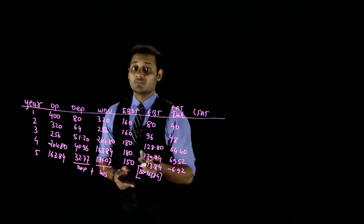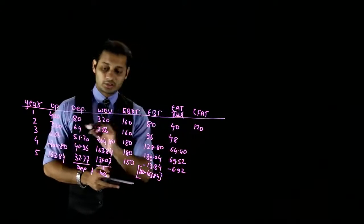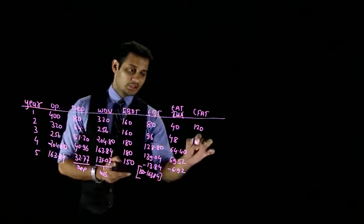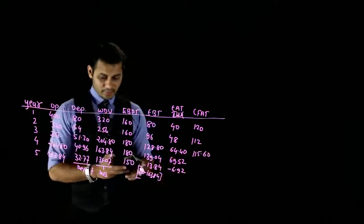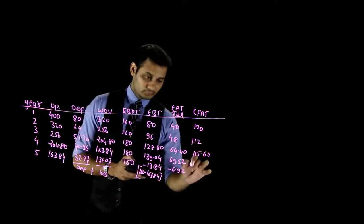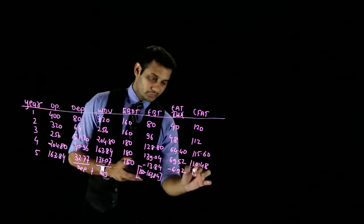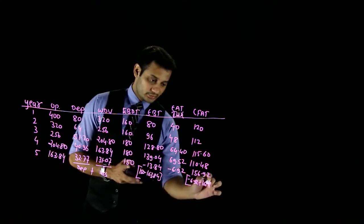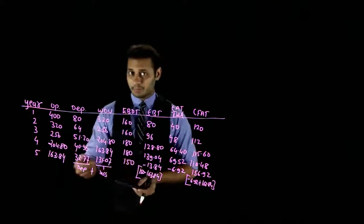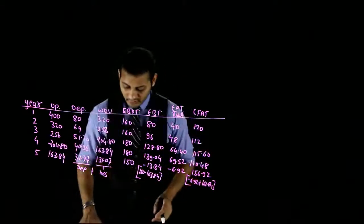Now calculating Cash Flow After Tax by adding back depreciation (non-cash item). We deducted depreciation only for tax purposes; now that tax figures are determined, we add it back. Year 1: 40 + 80 = 120. Year 2: 48 + 64 = 112. Year 3: 64.4 + 51.2 = 115.6 (approximately). Year 4: 69.52 + 40.96 = 110.48 (approximately). Year 5: -6.92 + 163.84 = 156.92 — both the loss and the depreciation are non-cash, so both are added back.